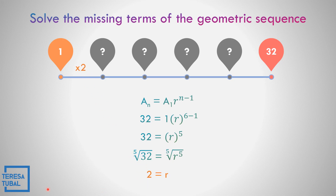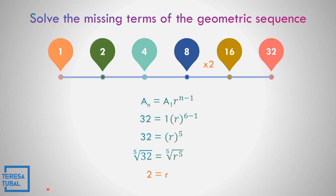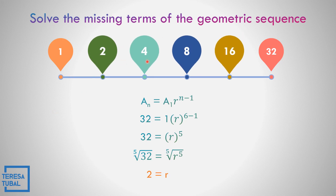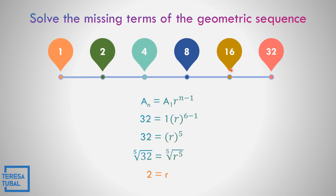So let us solve the missing terms. 1 times 2 is 2. 2 times 2 is equal to 4. 4 times 2 is equal to 8. 8 times 2 is 16. It means the missing terms of this geometric sequence are 2, 4, 8, and 16.